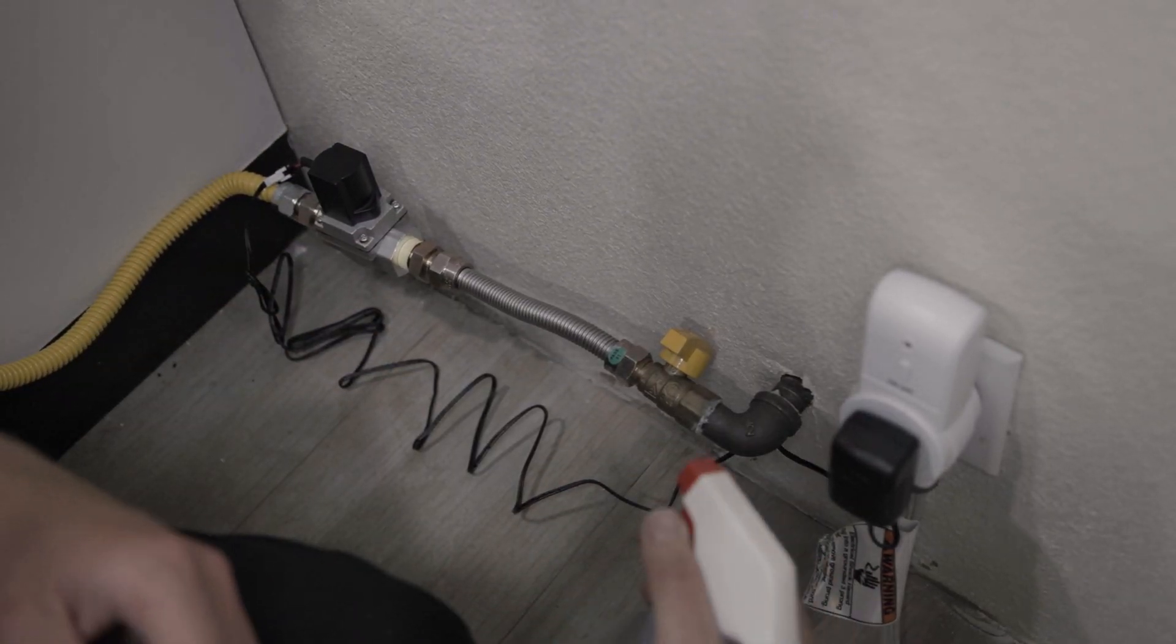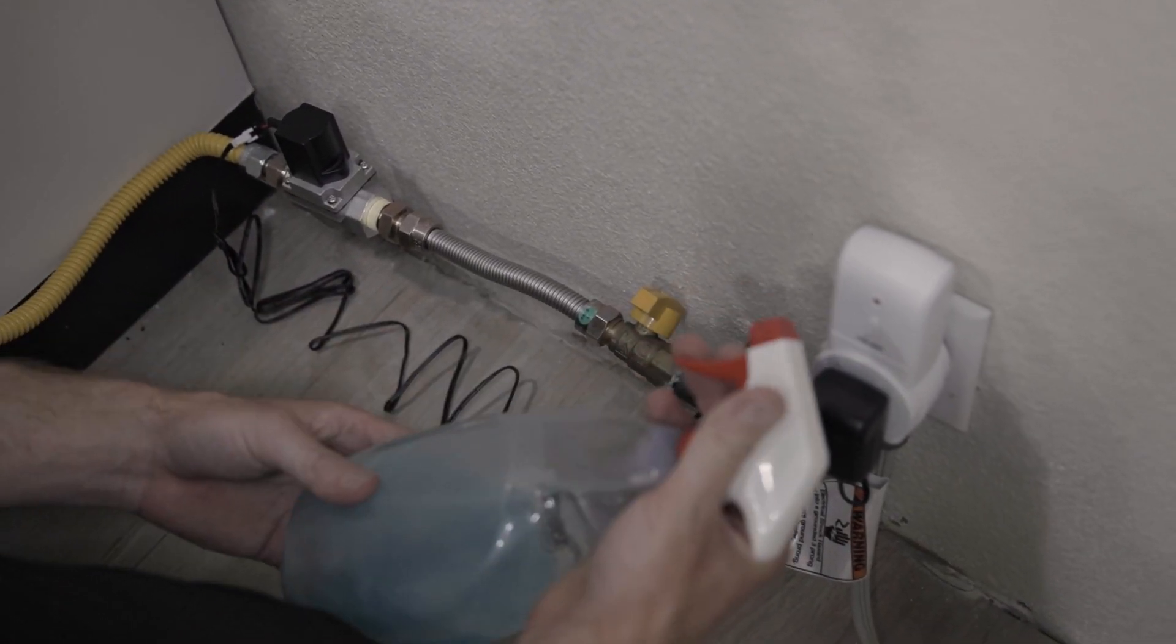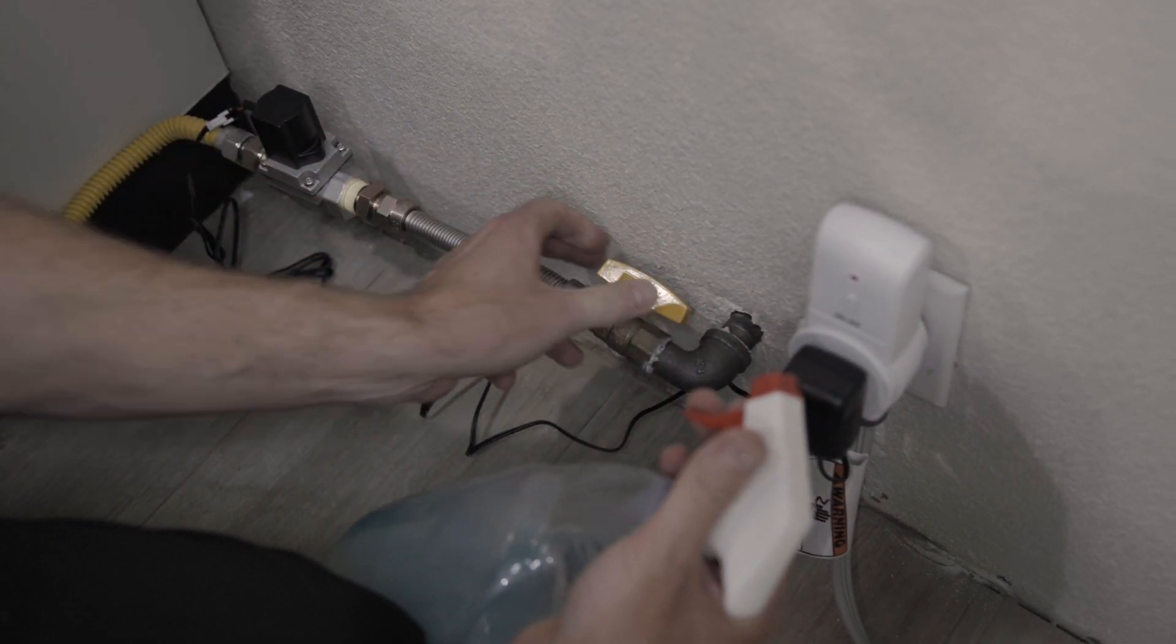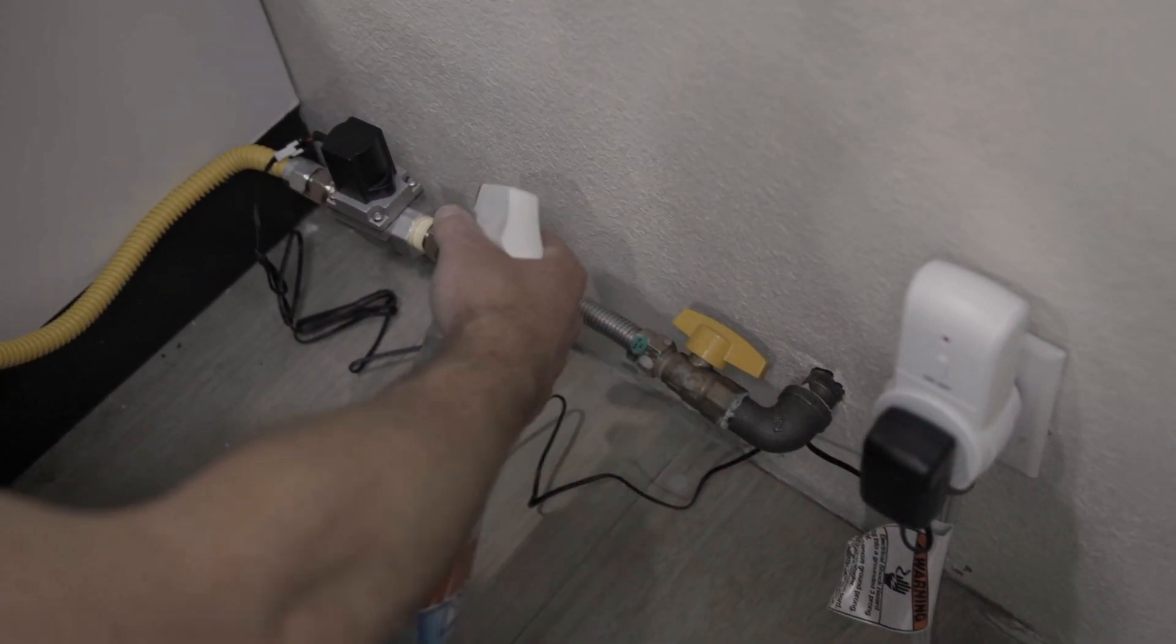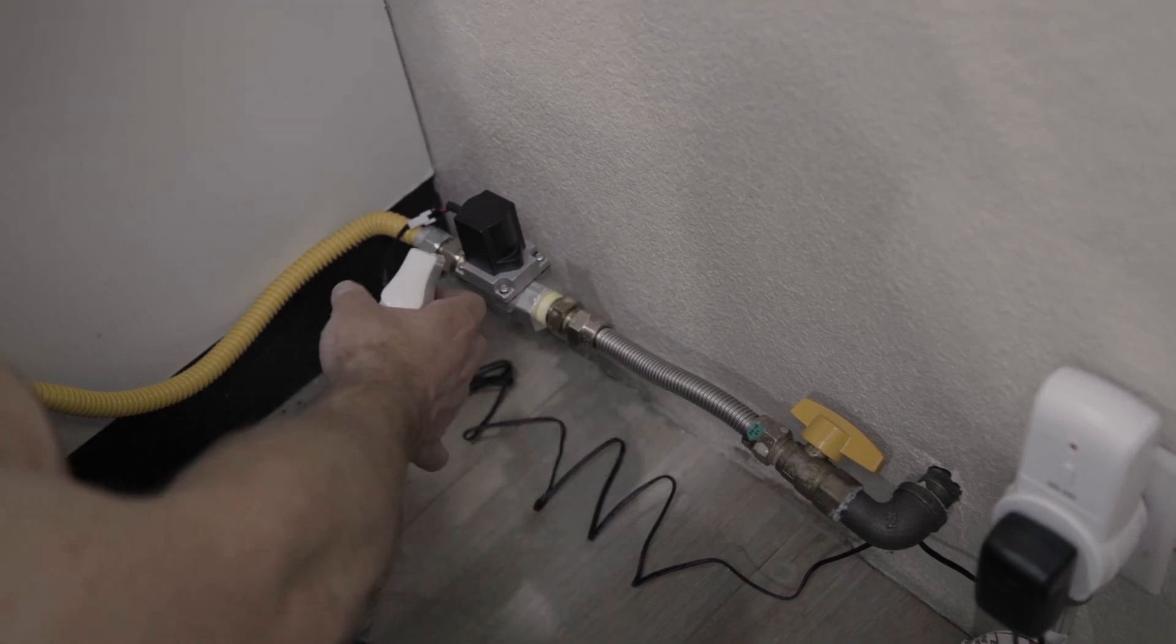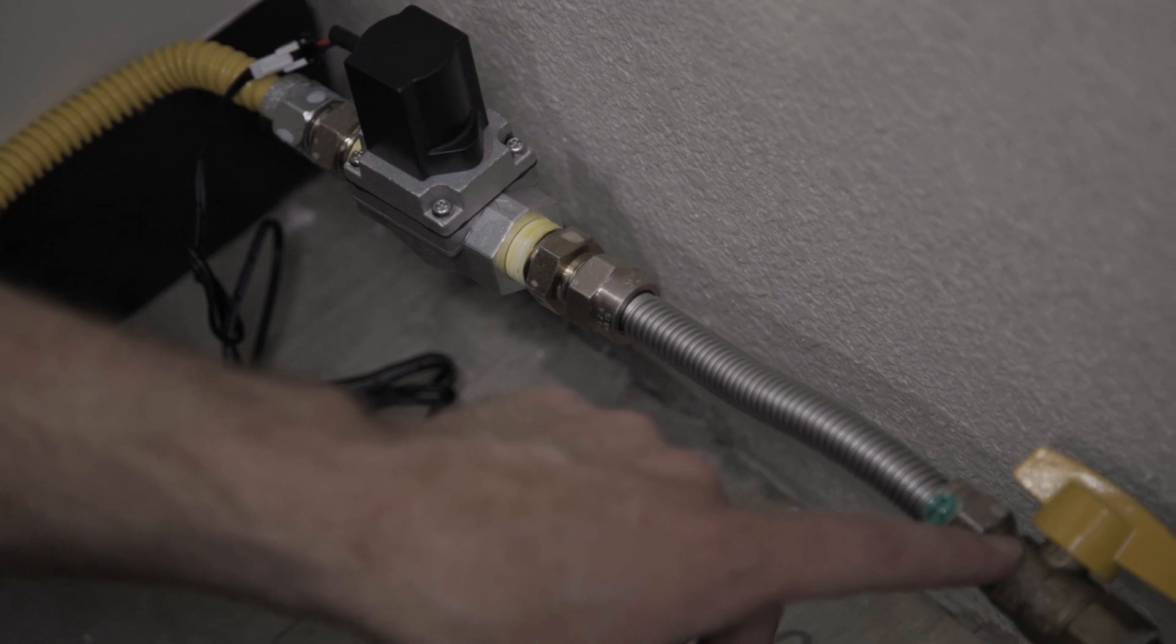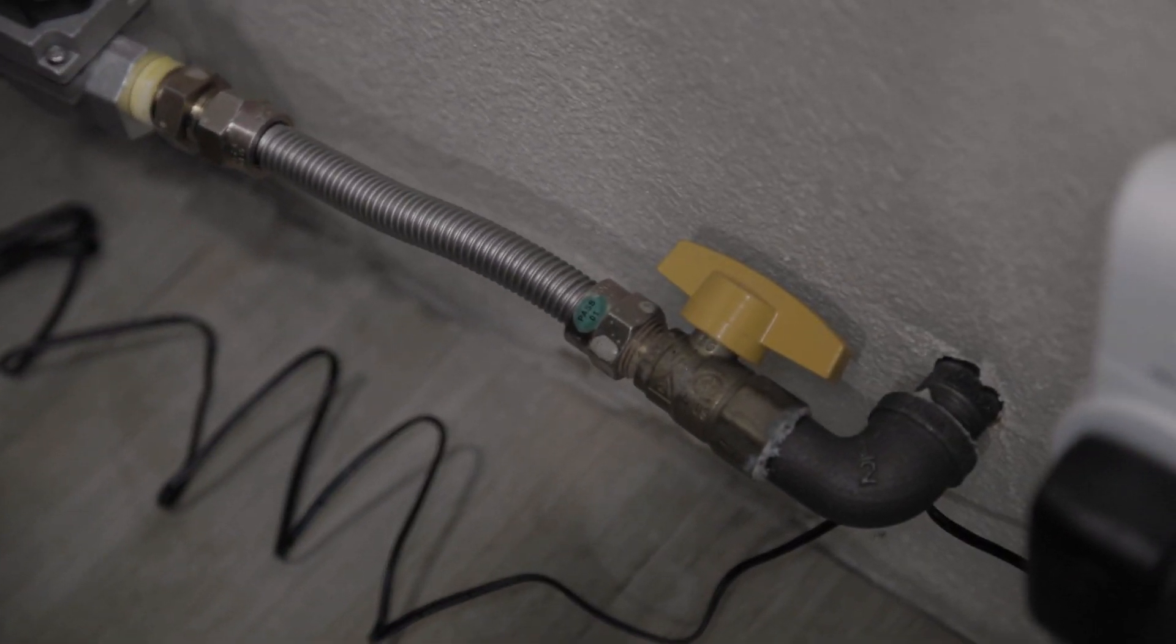After you're done testing the solenoid, use a gas leak detection liquid. Turn your gas line back on and you're going to spray that on the joints to make sure there's no gas leaks. Typical gas leak can be seen by bubbles forming around the threads.